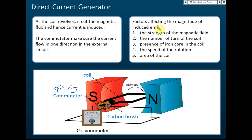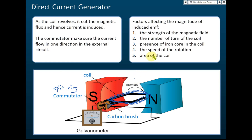Next, the factors affecting the magnitude of the induced EMF. First, use a stronger magnet to increase the strength of the magnetic field. Second, increase the number of turns of the coil — you can have many turns, even a few hundred. Third, the presence of an iron core: placing an iron core in the middle increases the strength of the magnetic field.